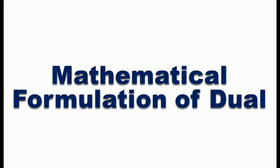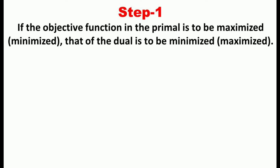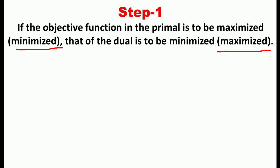We will explain the various steps to formulate the dual problem along with a suitable example. The first step towards the mathematical formulation of the dual problem: if the objective function in the primal problem is to be maximized then its dual is to be minimized, and if the objective function in the primal problem is to be minimized then its dual is to be maximized.